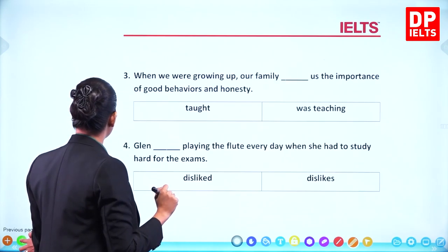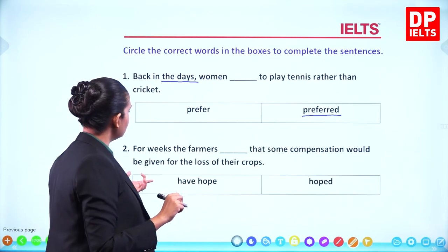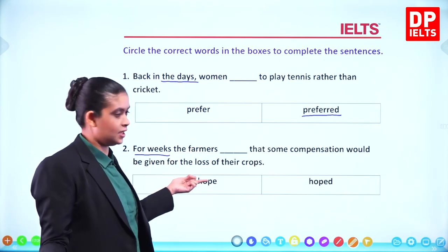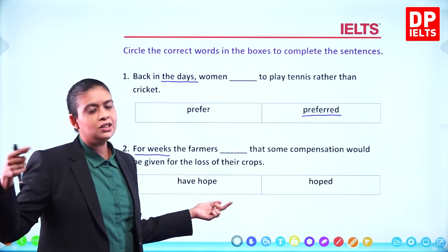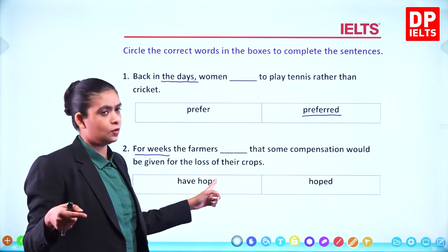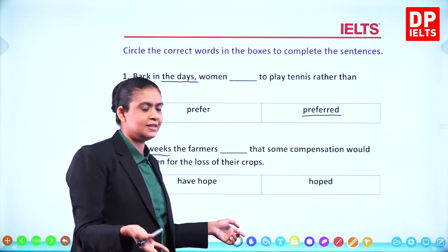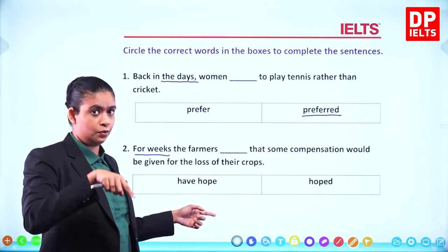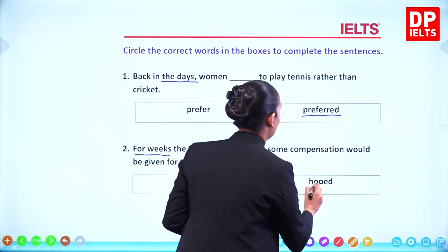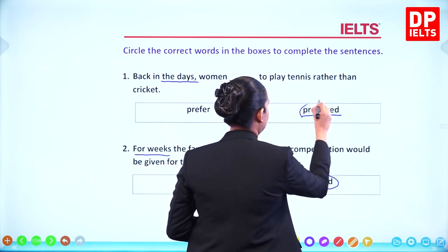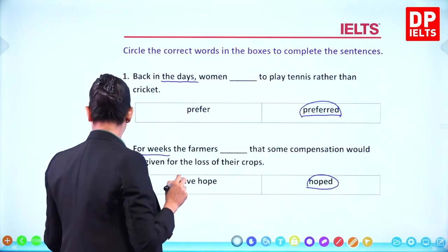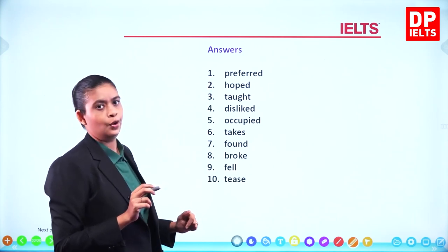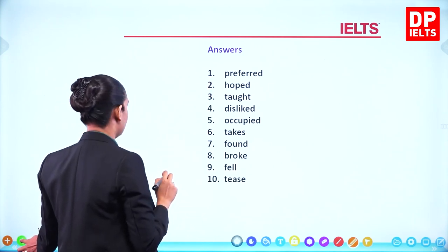Sentence two: 'For weeks, the farmers hoped that some compensation would be given.' It was happening repeatedly in the past, so you cannot say 'have hope' — the answer is 'hoped.' Looking at answers one and two: preferred and hoped.